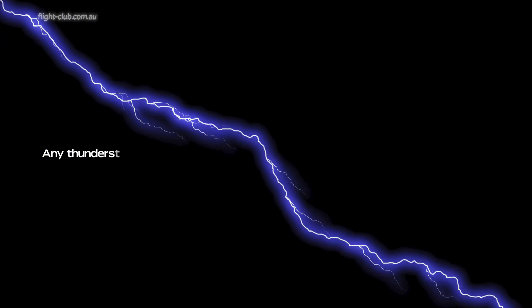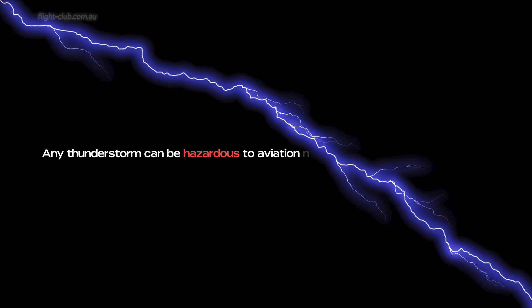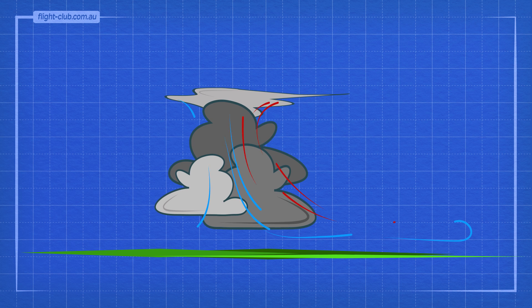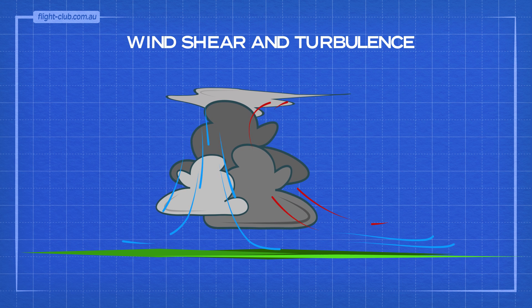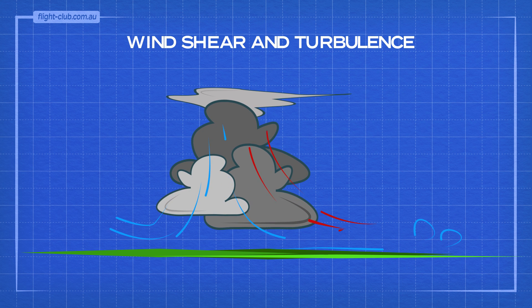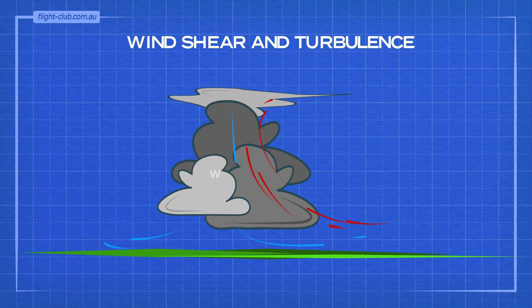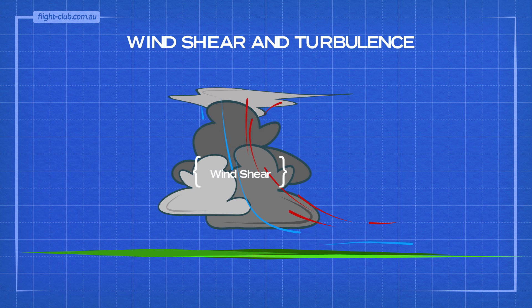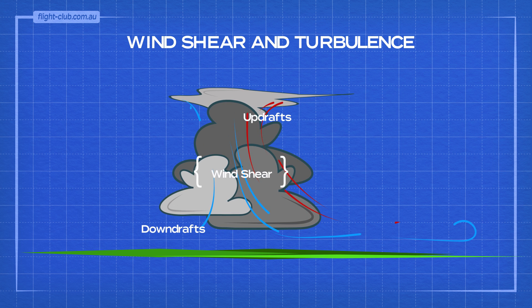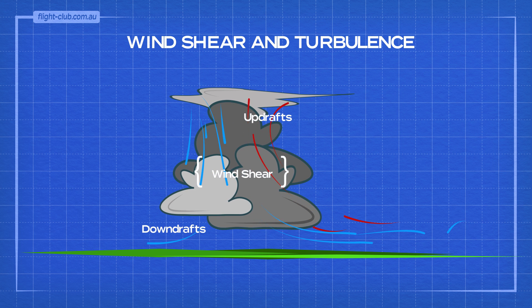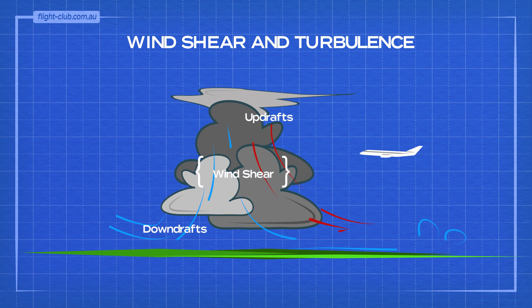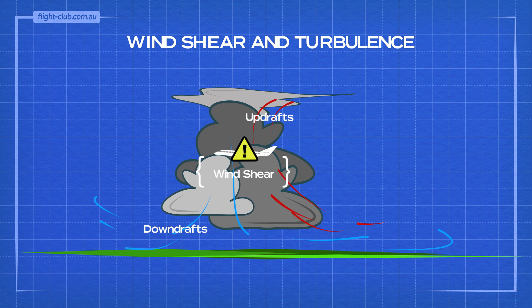Any thunderstorm can be hazardous to aviation no matter what its size or intensity. Windshear and turbulence pose the most significant hazard. Windshear between adjacent updrafts and downdrafts imposes severe loading on the aeroplane structure.